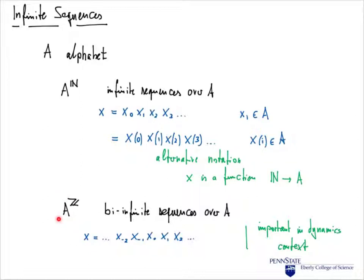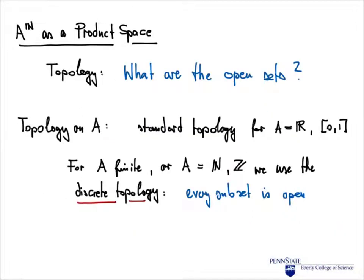We will also be working with bi-infinite sequences over A, denoted A to the Z. Such bi-infinite sequences look like: x_{-2}, x_{-1}, x_0, x_1, x_2, and so on. Instead of using the natural numbers as indices, we use the integers. This will be important in the dynamics context when we look at shift maps.